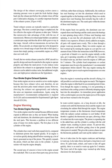The design of the exhaust converging section causes a returning pressure wave to push the fresh fuel/air charge back into the exhaust port before the cylinder closes off that port — called pulse charging — another important function of the exhaust system. Tuned exhaust systems are typically tuned to a particular RPM range; the more a certain RPM range is emphasized, the less effective the engine will operate at other RPM. Aircraft, with no transmission, cannot shift gears to stay in the optimal RPM range, so an exhaust pipe must be designed to operate over a broad range of RPM from idle to full speed. The two-stroke exhaust system for a WSC aircraft is a specific design and must be matched to the engine to operate properly and obtain the rated power.